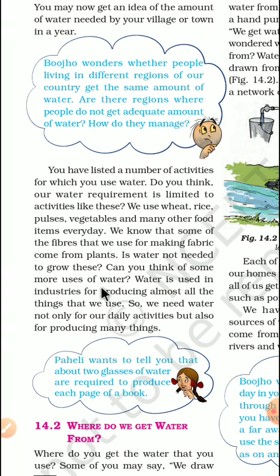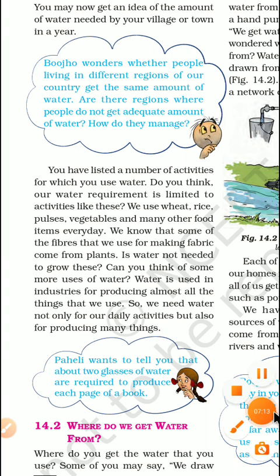Can you think of some more uses of water? Water is used in industries for producing almost all the things that we use. So we need water not only for our daily activities, but also for producing many things. This means the food we eat, the clothes and materials we use — water is needed for all these activities.